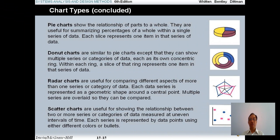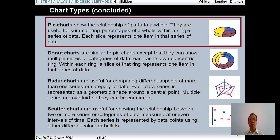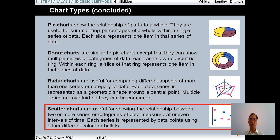Now let me go to pie charts. They show the relationship of part to a whole and can be useful for summarizing percentages — about the percentage of a whole within a single series of data. For example, you can see how many percent passed in an examination, using a pie chart to show the relationship of parts to a whole. You may also have a scatter chart, radar chart, or donut chart. Scatter charts are useful for showing the relationship between two or more series or categories of data measured at a point in time.